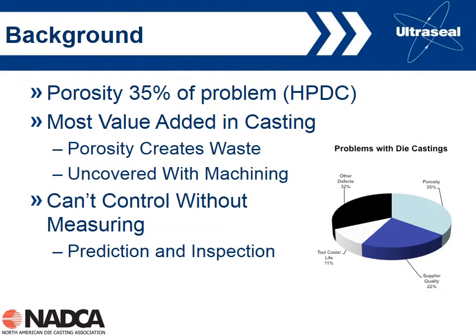As background, NADCA did a survey of end users asking what the primary problem they have with die casting. From the respondents, 35% said porosity and another 32% said other defects — and many of these defects have the same origin as porosity. So basically we can add these two together: 32 plus 35 is 67%, meaning two-thirds of people responding said that porosity or porosity-related issues were their biggest problem with die casting.